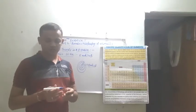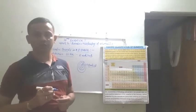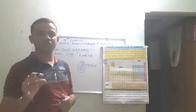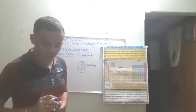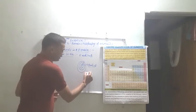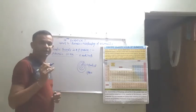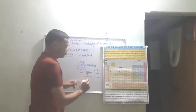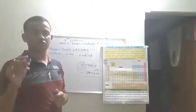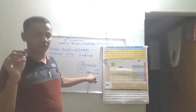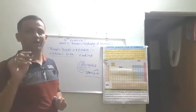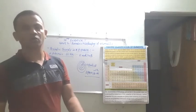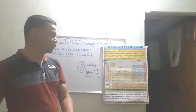Atomic radius is expressed in the unit of picometer, which is smaller than the nanometer. Atomic radius is measured in a unit called picometer, shown by pm, and one picometer is equal to 10 raised to minus 12 meters.